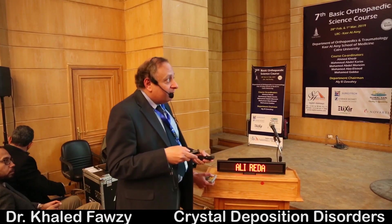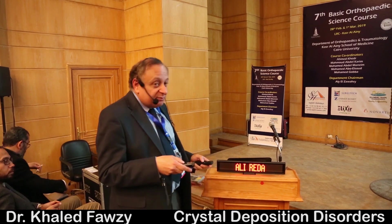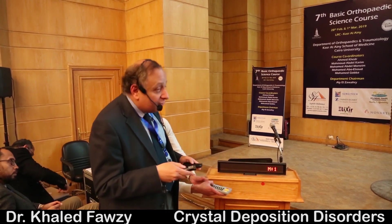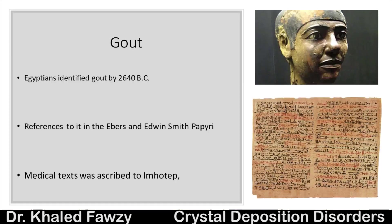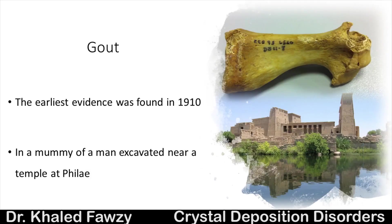Gout was referred to in the Edwin Smith papyrus and the Ebers papyrus, medical texts ascribed to Amenhotep. The evidence was confirmed when a mummy was discovered and excavated near the Philae temple in Aswan, showing a typical punched-out lesion of gout. The ancient Egyptians recognized it and treated it with herbal medicines that contained colchicine.